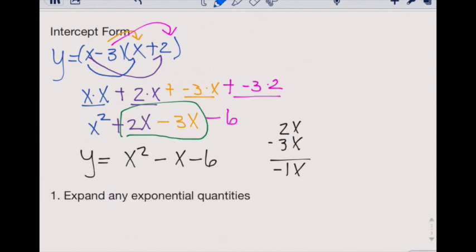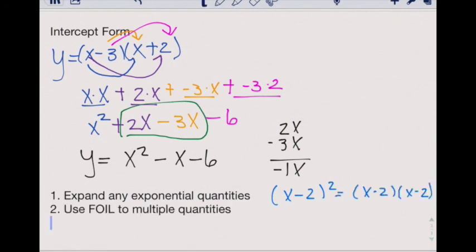To summarize, to start, expand out any exponential quantities such as x minus 2 quantity squared and rewrite it as expanded out multiplication. Use FOIL to multiply quantities.